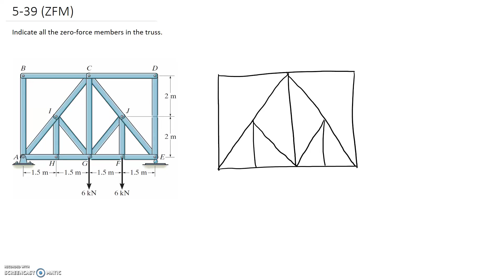Alright, so we're going to start this off by just drawing the free body diagram and identifying all the different joints which have externally applied forces. So we've got the six kilonewton ones on both of these nodes or joints. So neither of these are going to be able to have either of the zero force member rules applied.